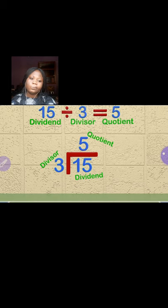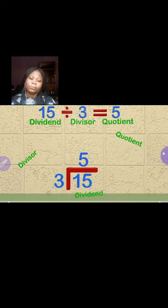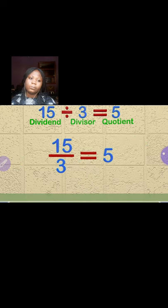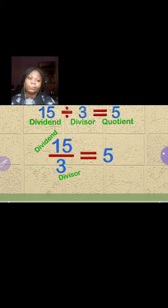Let's look at one last way to show a division problem. Again, this problem is the same as before. The 15 is the dividend and is on top of a division bar. The three is the divisor, and the number five is the quotient.